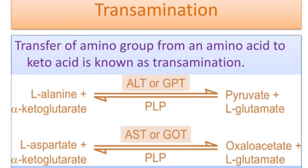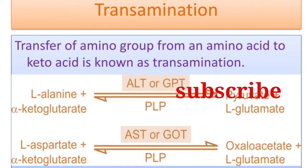Transamination, as the name indicates, involves the transfer of an amino group. For example, in alanine transaminase, alanine reacts with alpha-ketoglutarate. Alanine transfers its amino group to alpha-ketoglutarate, aided by the coenzyme pyridoxal phosphate. Alanine is converted into pyruvate and alpha-ketoglutarate is converted into glutamate. Similarly, aspartate transaminase converts aspartate and alpha-ketoglutarate into oxaloacetate and glutamate. These are the two most common transamination reactions, in which the amino group is transferred from an amino acid to a keto acid, and both reactions are reversible.